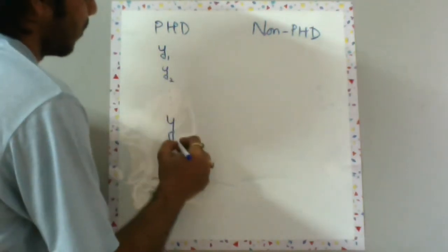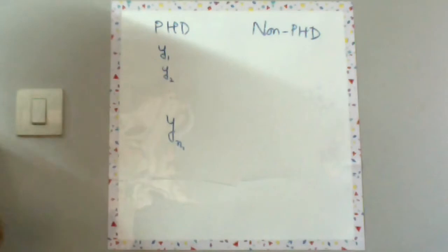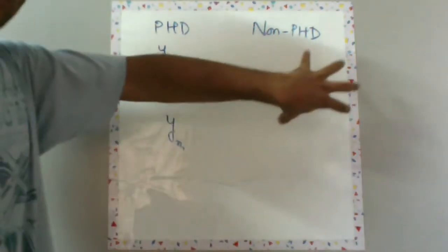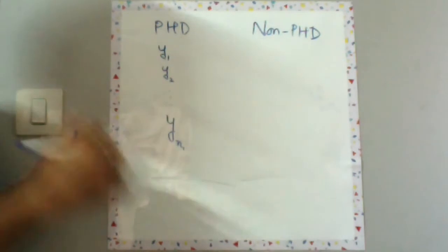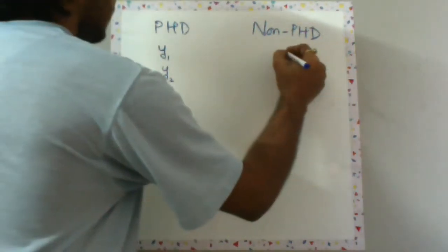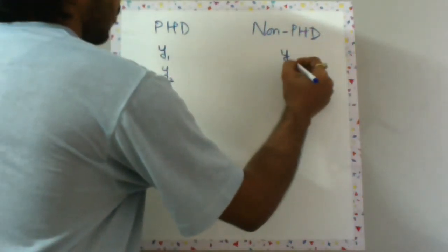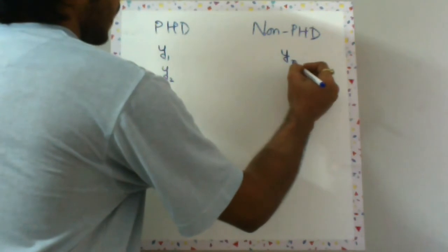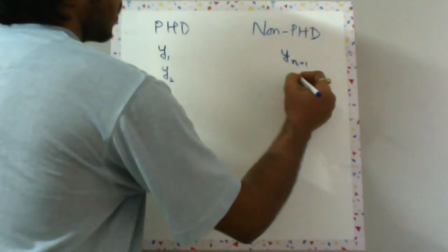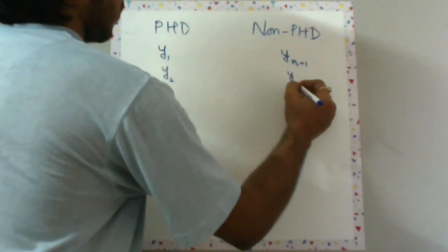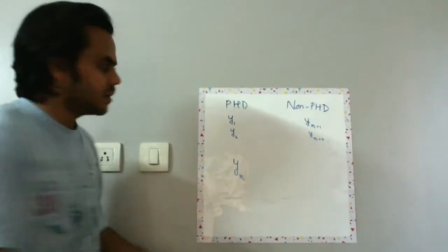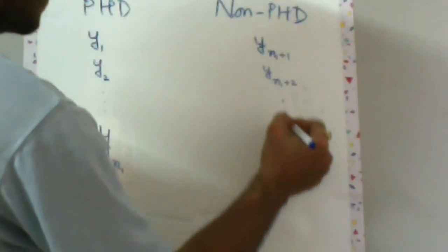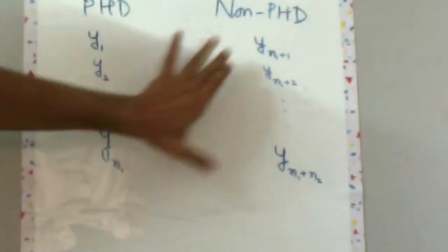Now if I have data on the salary of PhD grads and non-PhD grads, let us say I have y1, y2, and so on, and yn1. And for non-PhD students I have the salary data as yn1 plus 1, yn1 plus 2, so on.